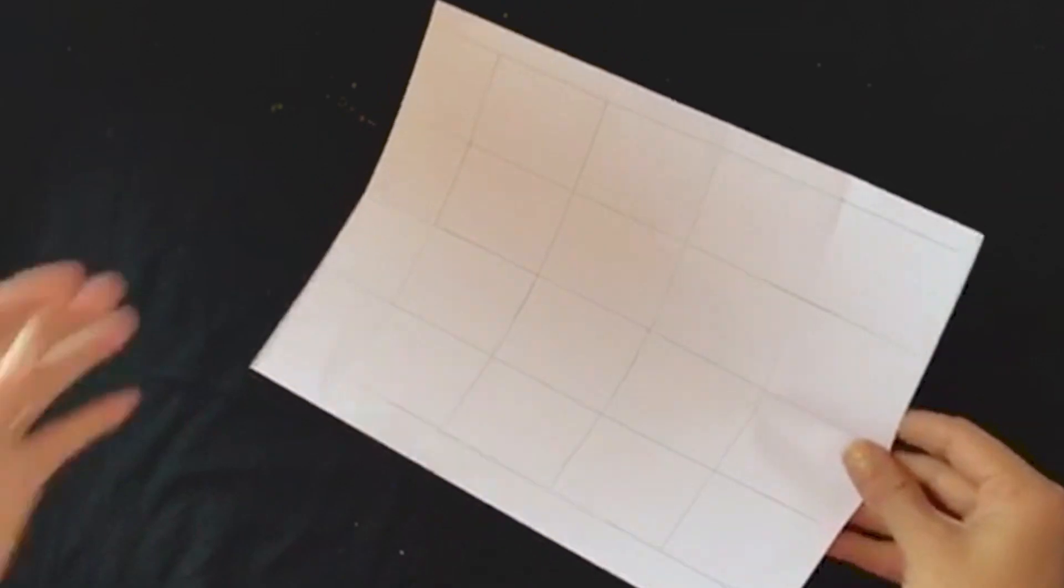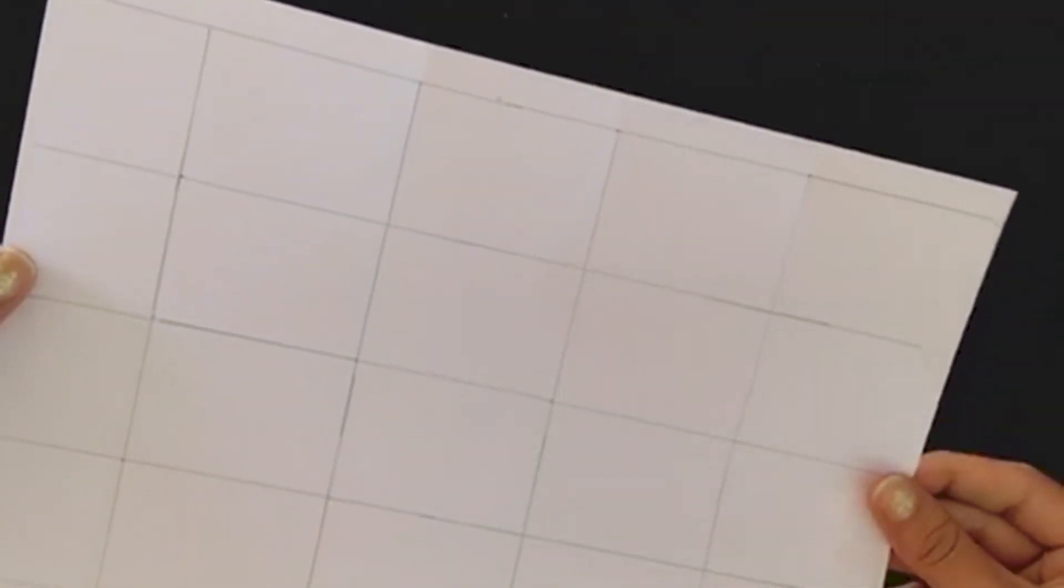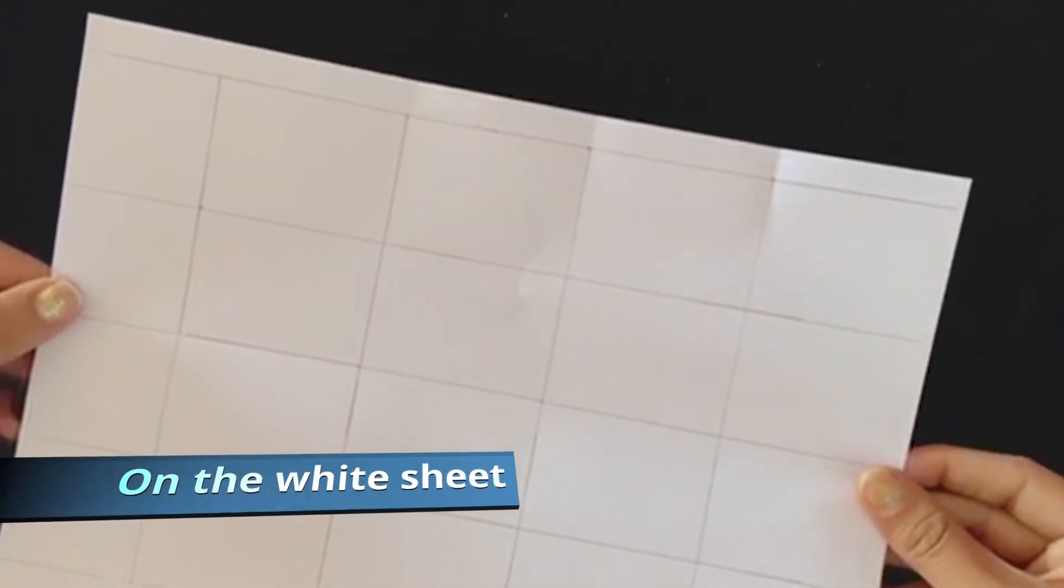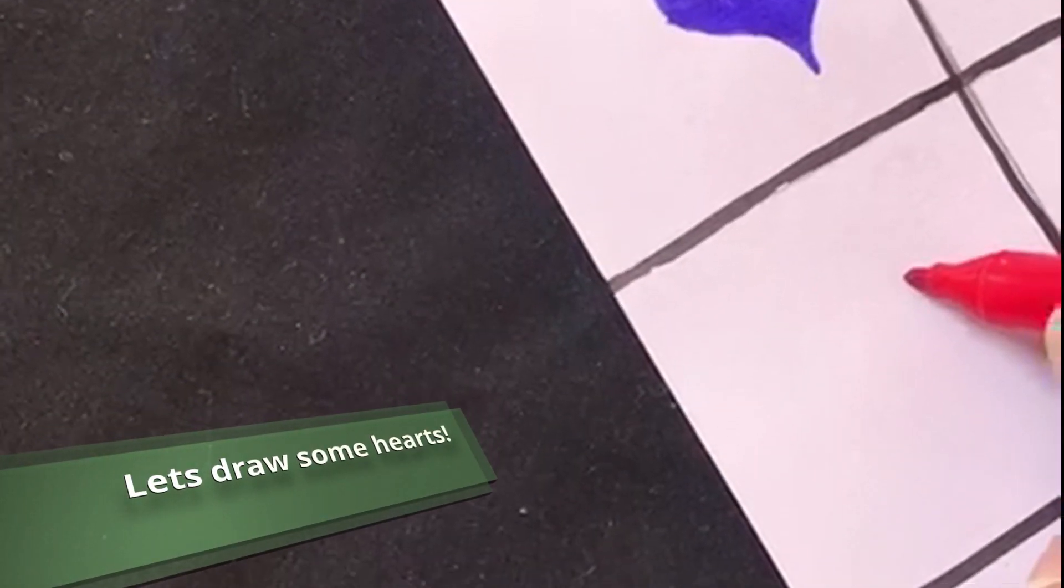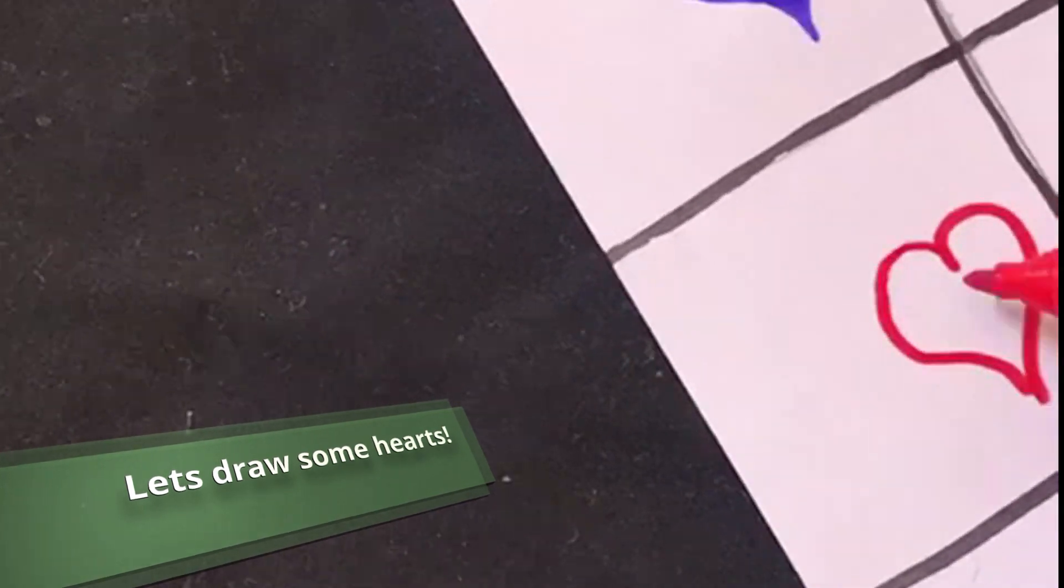Let's see what the activity is. Take a white A4 sheet and make a 4 by 5 grid on it. In one margin, draw four hearts of four different colors.